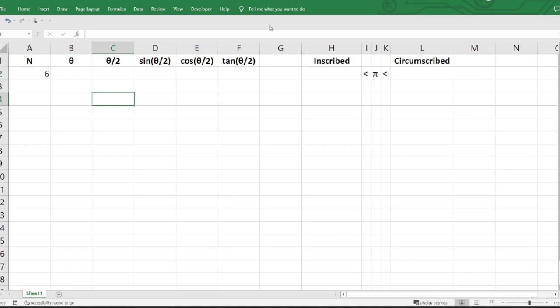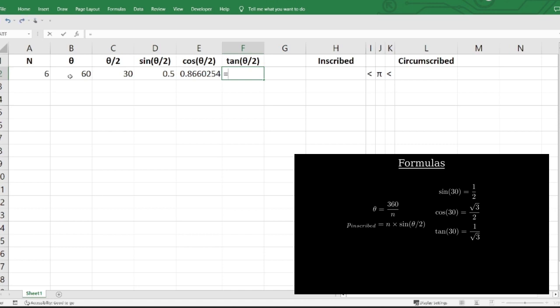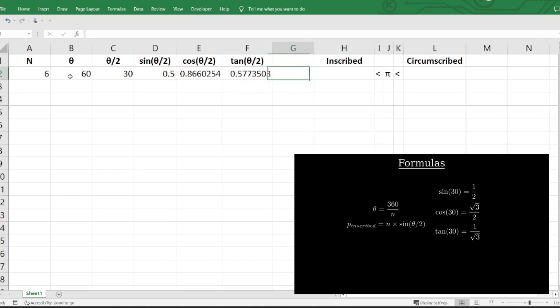Okay, here we are back in Excel. In this little window over here, I've put together a cheat sheet of the formulas we've used so far, and let's start filling those into Excel. So we want to start with a hexagon that has n equals six sides. So θ is just 360 divided by n. And θ over 2 is just half of that. Okay, so now we need the sine of 30, cosine, and tangent. Well, we have that from just now. So that's a half. This is equal to the square root of 3 divided by 2. And this is equal to 1 divided by the square root of 3. And then the perimeter of the inscribed one is n times the sine. And that's the value of 3 that we had before.